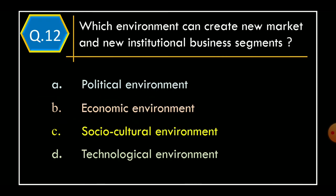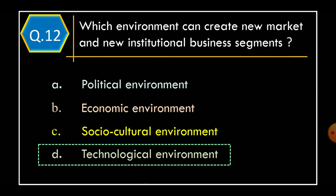Question 12. Which environment can create new markets and new institutional business segments? Option A: Political environment. Option B: Economic environment. Option C: Sociocultural environment. Option D: Technological environment. The correct option is Option D: Technological environment.